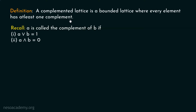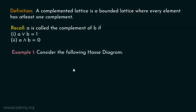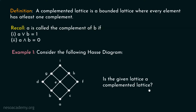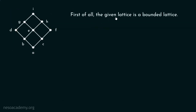Let's see one example to help us understand how to determine whether a lattice is a complemented lattice or not. Consider the following Hasse diagram. Our target is to find whether the given lattice is a complemented lattice or not. First of all, the given lattice is a bounded lattice — there is no doubt about this.